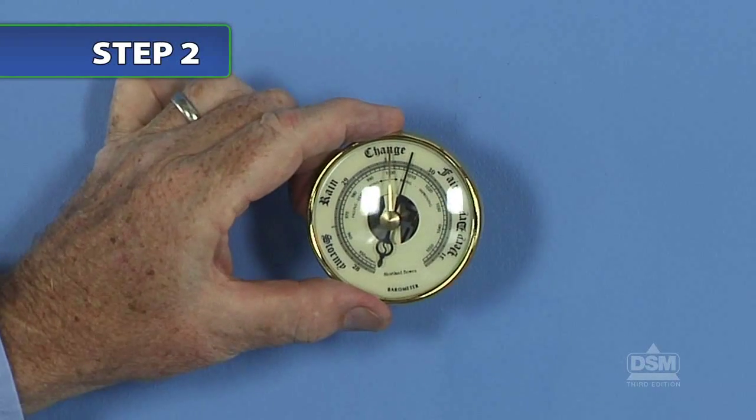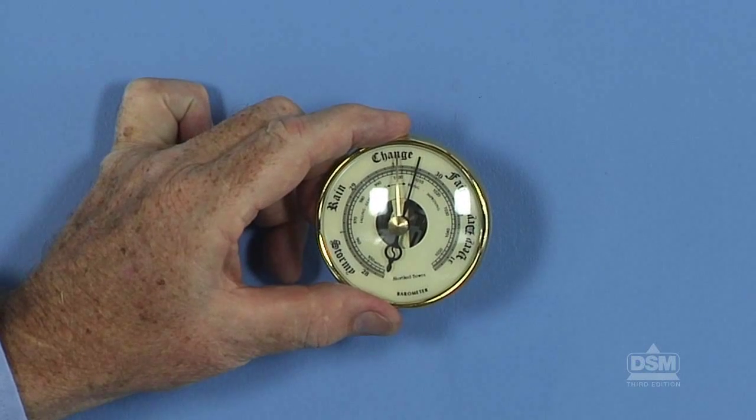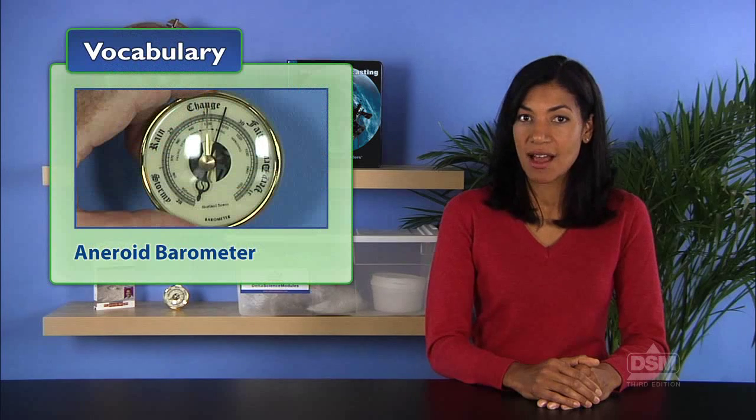Next, hold up the aneroid barometer for everyone to see and explain what it is. Tell students that aneroid means that the instrument does not need liquid to operate. Therefore, an aneroid barometer does not contain mercury.